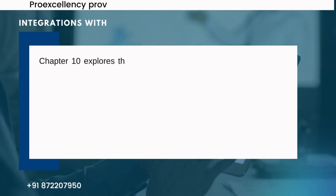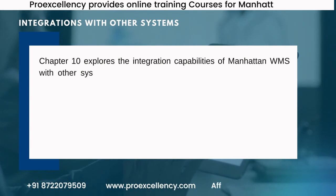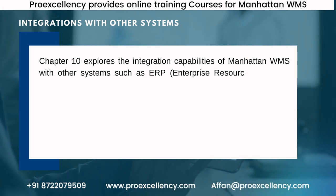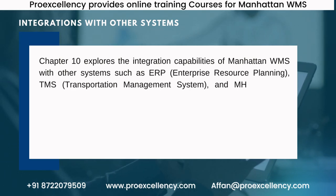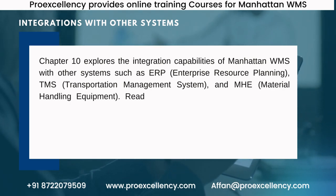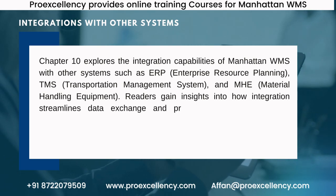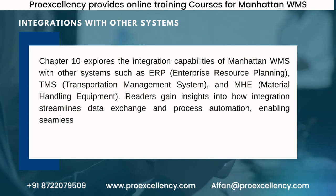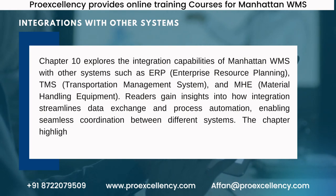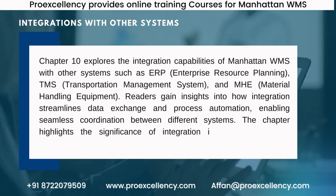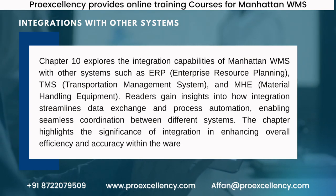Integrations with Other Systems. Chapter 10 explores the integration capabilities of Manhattan WMS with other systems such as ERP (Enterprise Resource Planning), TMS (Transportation Management System), and MHE (Material Handling Equipment). Readers gain insights into how integration streamlines data exchange and process automation, enabling seamless coordination between different systems. The chapter highlights the significance of integration in enhancing overall efficiency and accuracy within the warehouse.